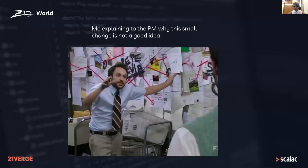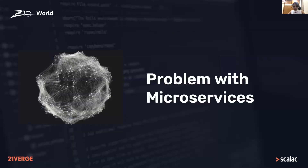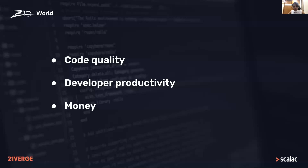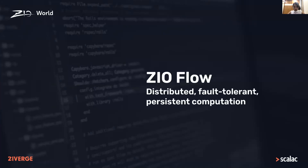Microservice architecture introduces an inevitable problem by definition, because the state of the system needs to be distributed across different services. With every call to an external service, we have to write several lines of checks to ensure nothing fails in the middle of a transaction — and even then it is practically impossible to avoid data loss, race conditions, or bugs. This costs developers their time and energy, and costs employers a lot of money. The code that comes out of this is complex and convoluted, and we can never tell for sure if a change will blow up some downstream service. This is where ZIO Flow comes in — we believe it gives an elegant and easy way to make distributed systems more reliable.